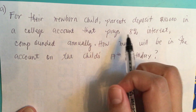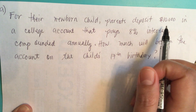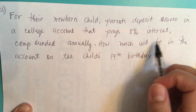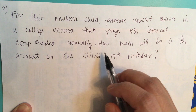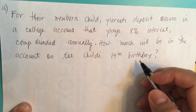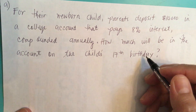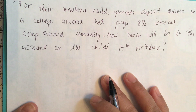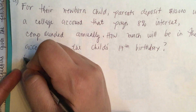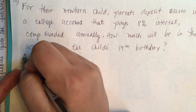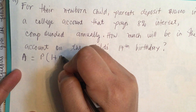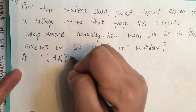For a newborn child, parents deposit ten thousand dollars in a college account that pays eight percent interest compounded annually. How much will be in the account on the child's 17th birthday? The formula for compound interest is that the amount is equal to the principal times one plus r over n, to the n times t power.